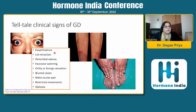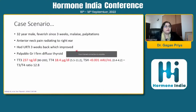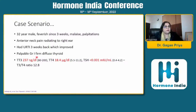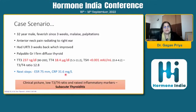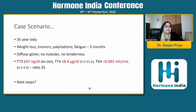Another patient has exophthalmos, lid retraction, and anterior neck pain radiating to the right ear. Three weeks prior there was a history of URTI that has improved, and examination reveals a grade one palpable diffuse goiter. Thyroid profile shows thyrotoxicosis with a T3/T4 ratio of 12.8. This picture is suggestive of subacute thyrotoxicosis, and the case could be managed as subacute thyroiditis clinically without the need for unnecessary investigations.